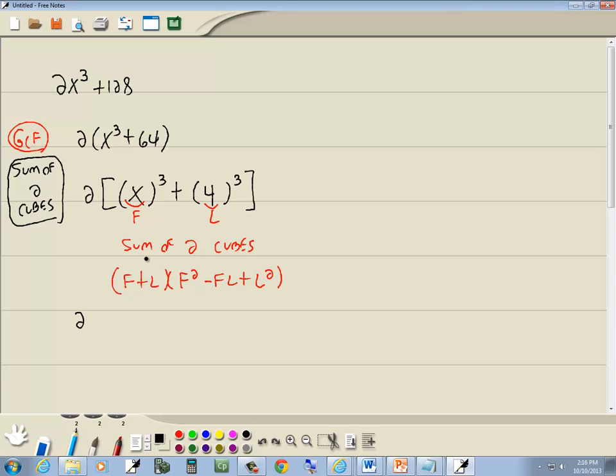Now everywhere I have an f, I'll plug in x, and everywhere I have an l, I'll plug in 4. So we've got 2 times x plus 4 times x squared minus x times 4 plus 4 squared.